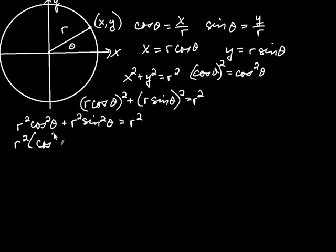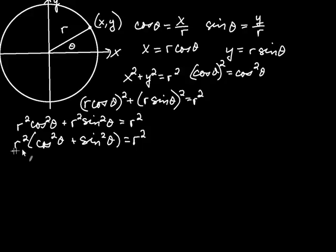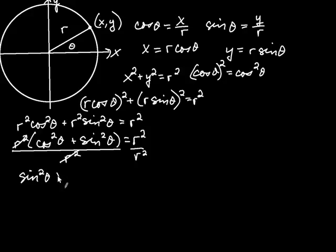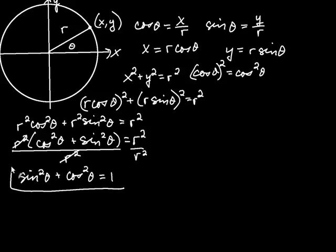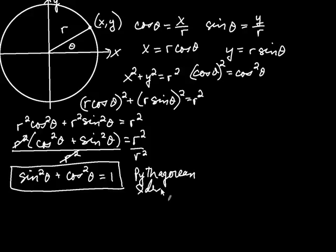Dividing both sides by r², the r² terms cancel. This is usually written as sine²θ + cosine²θ = 1. This identity is true no matter what the angle is, and it is called the Pythagorean identity — probably the most important identity in trig. It gets used all the time.